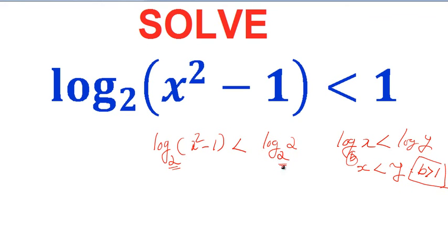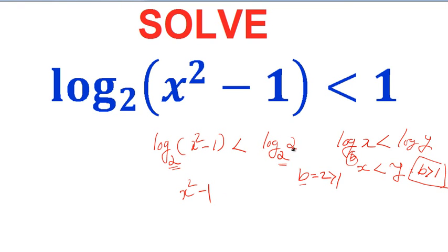This is the property we are using here. We can remove the logarithm on both sides because the base is 2, which is greater than 1. So when you remove it, the inequality remains the same and you have x² - 1 < 2.